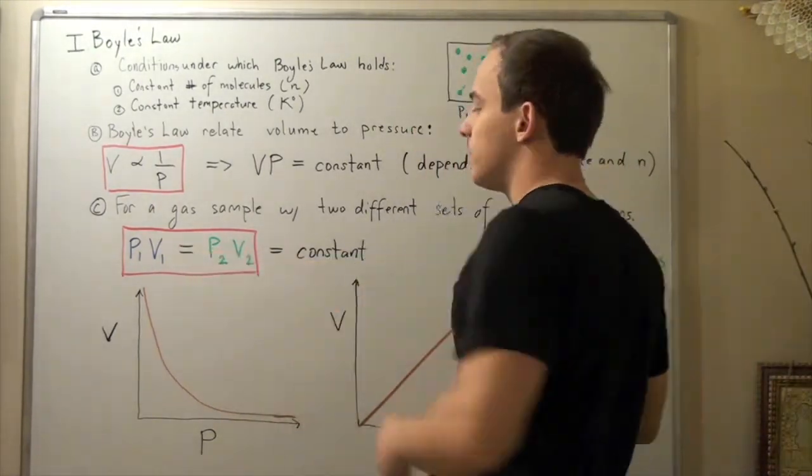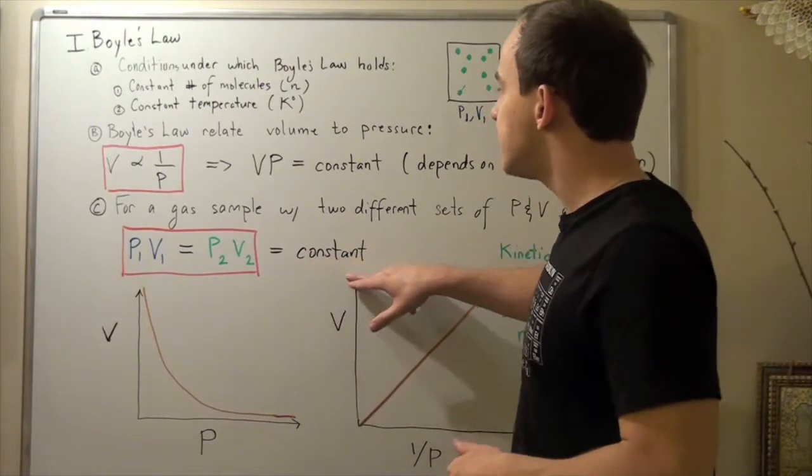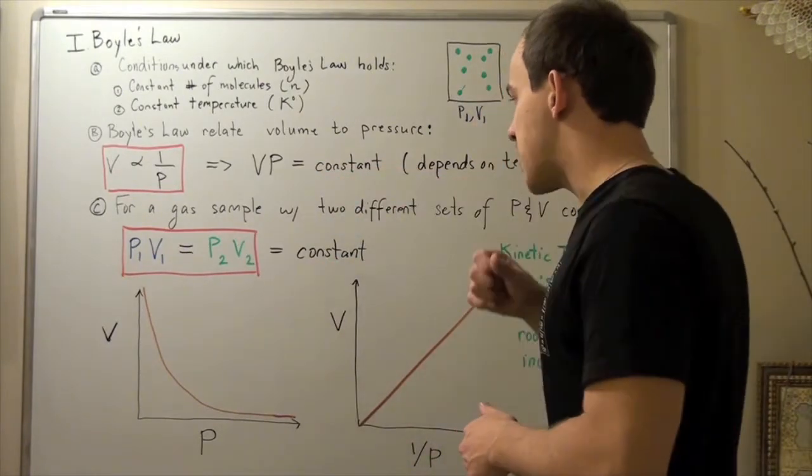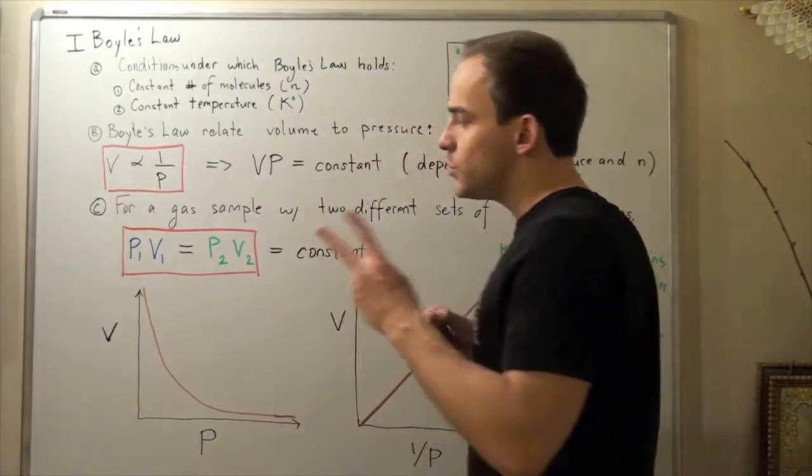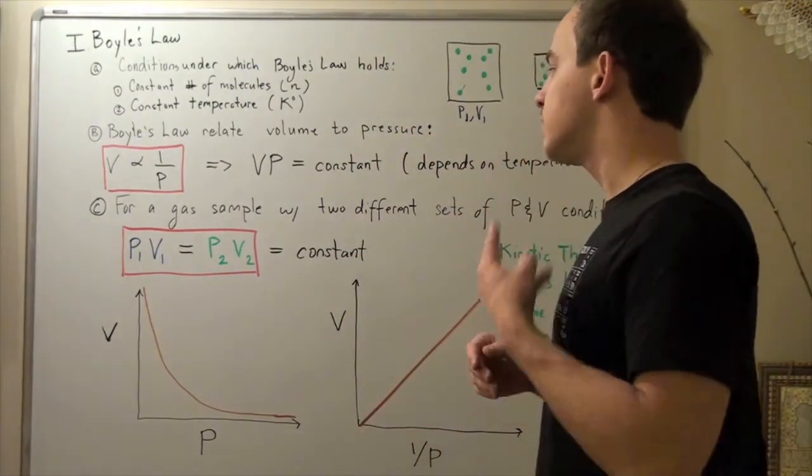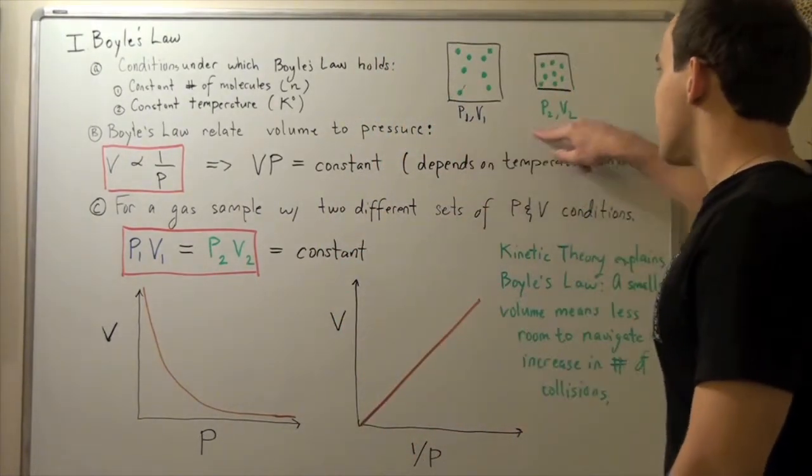And if I have the second set of conditions, P2 times V2, it will give me the same constant. Right? So I can set them equal. This guy is equal to the same constant that this number represents. So this is my equation for two sets of conditions.